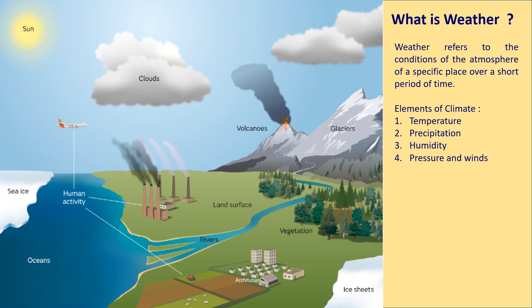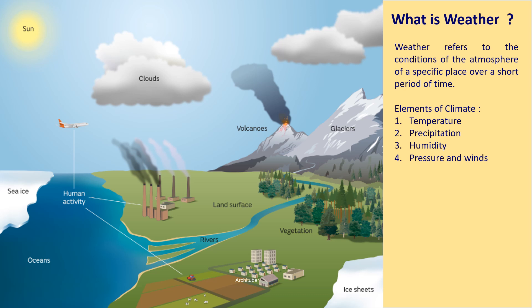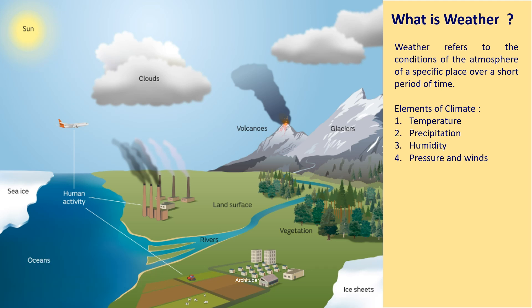Now discussing about weather — so what is weather? Weather refers to the condition of the atmosphere of a specific place over a short period of time. Weather changes every day, and because of global warming, you might have experienced many weather changes in a day. Weather consists of elements such as temperature, precipitation, humidity, pressure and winds.